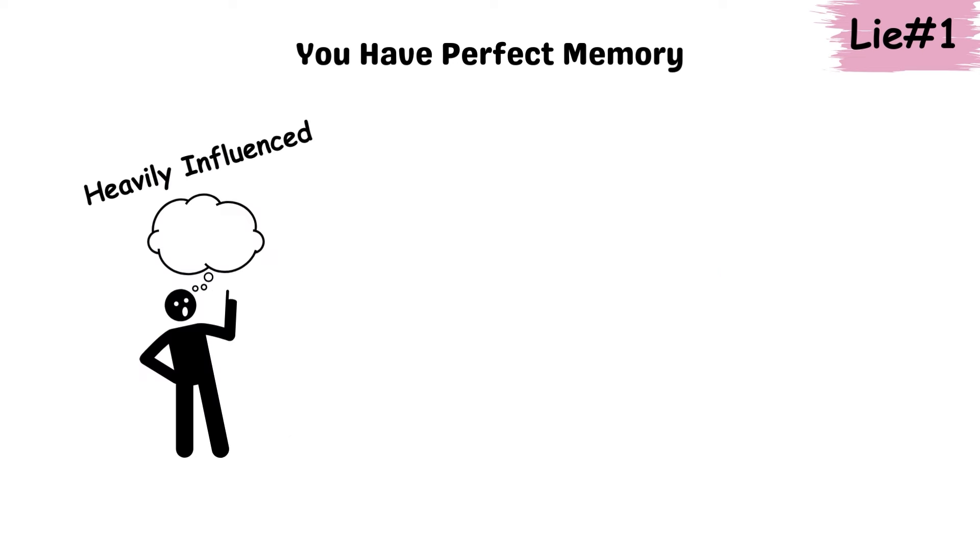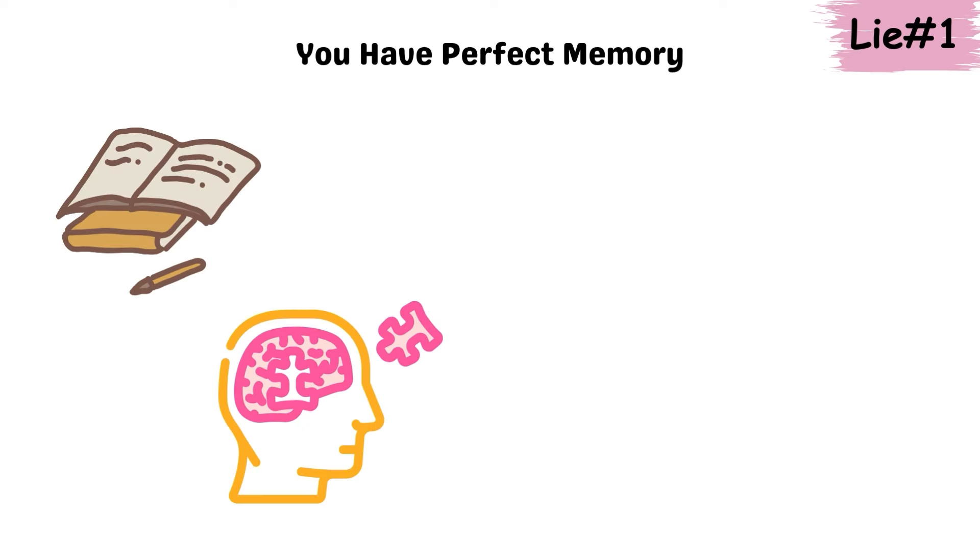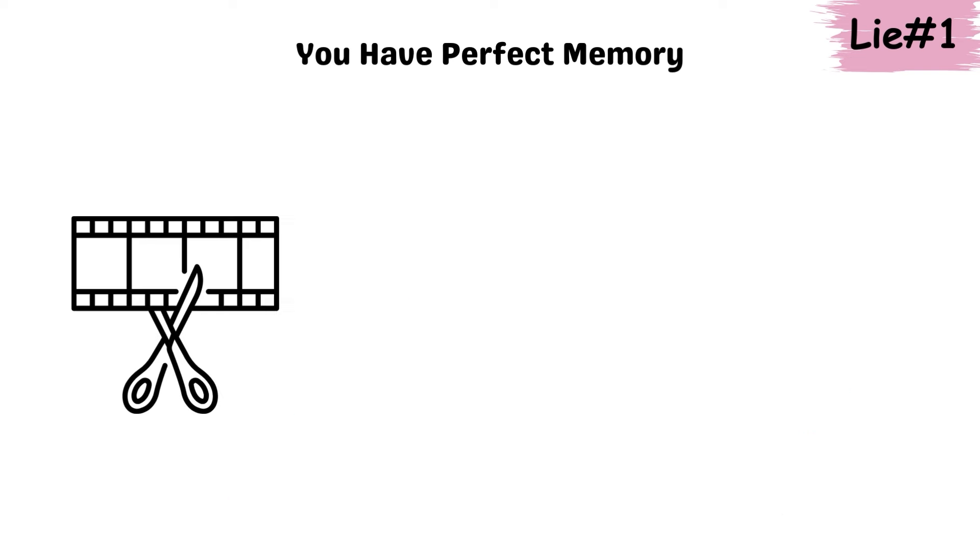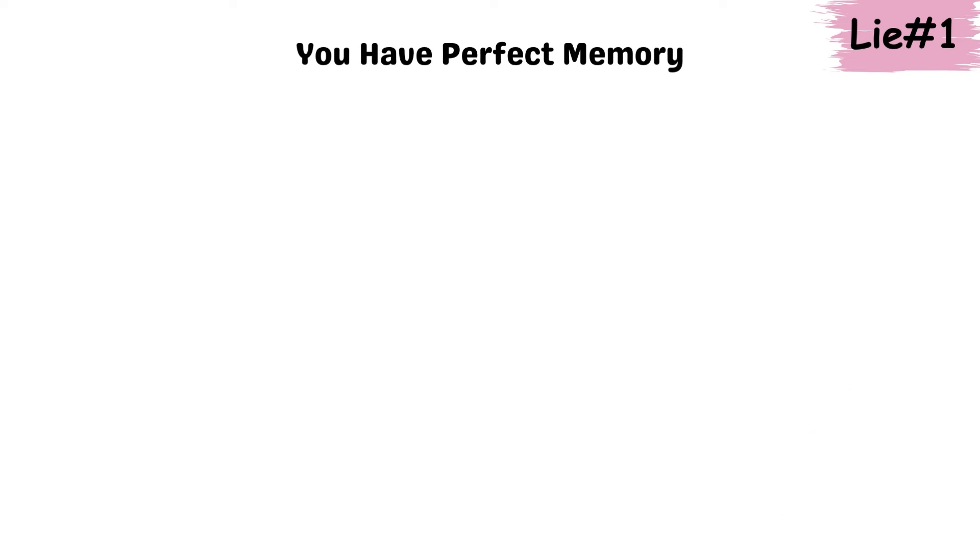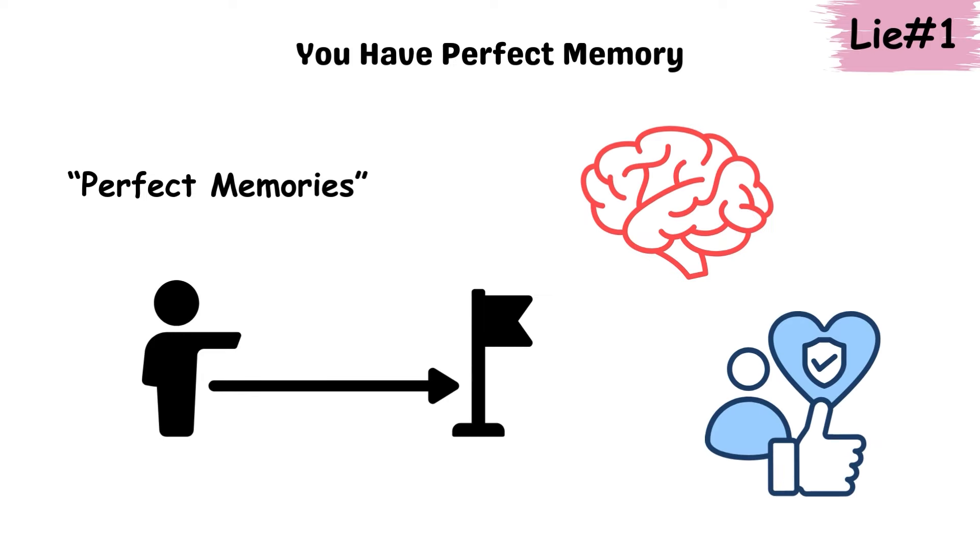What you remember is heavily influenced by emotions, biases, and details you might have unconsciously added or missed. Studies show that each time you recall a memory, it's slightly altered based on your current thoughts and feelings, like re-editing a movie every time you play it. This means our perfect memories are often far from accurate, and our brain tricks us into believing otherwise.